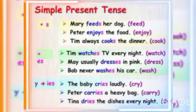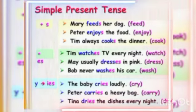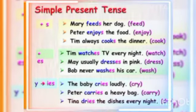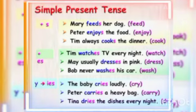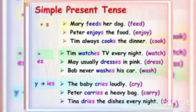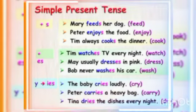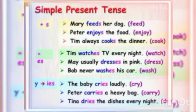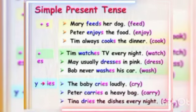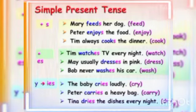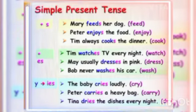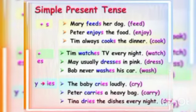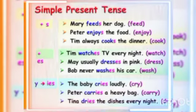When your main verb ends with Y, we convert Y into IES. Like, the baby cries loudly — the main verb was cry, Y is removed and IES is added. Similarly, Peter carries a heavy bag — carry ends in Y, so Y is removed and IES is added. Tina dries the dishes every night — dry becomes dries. In this way, Y is removed and IES is added to the main verb.